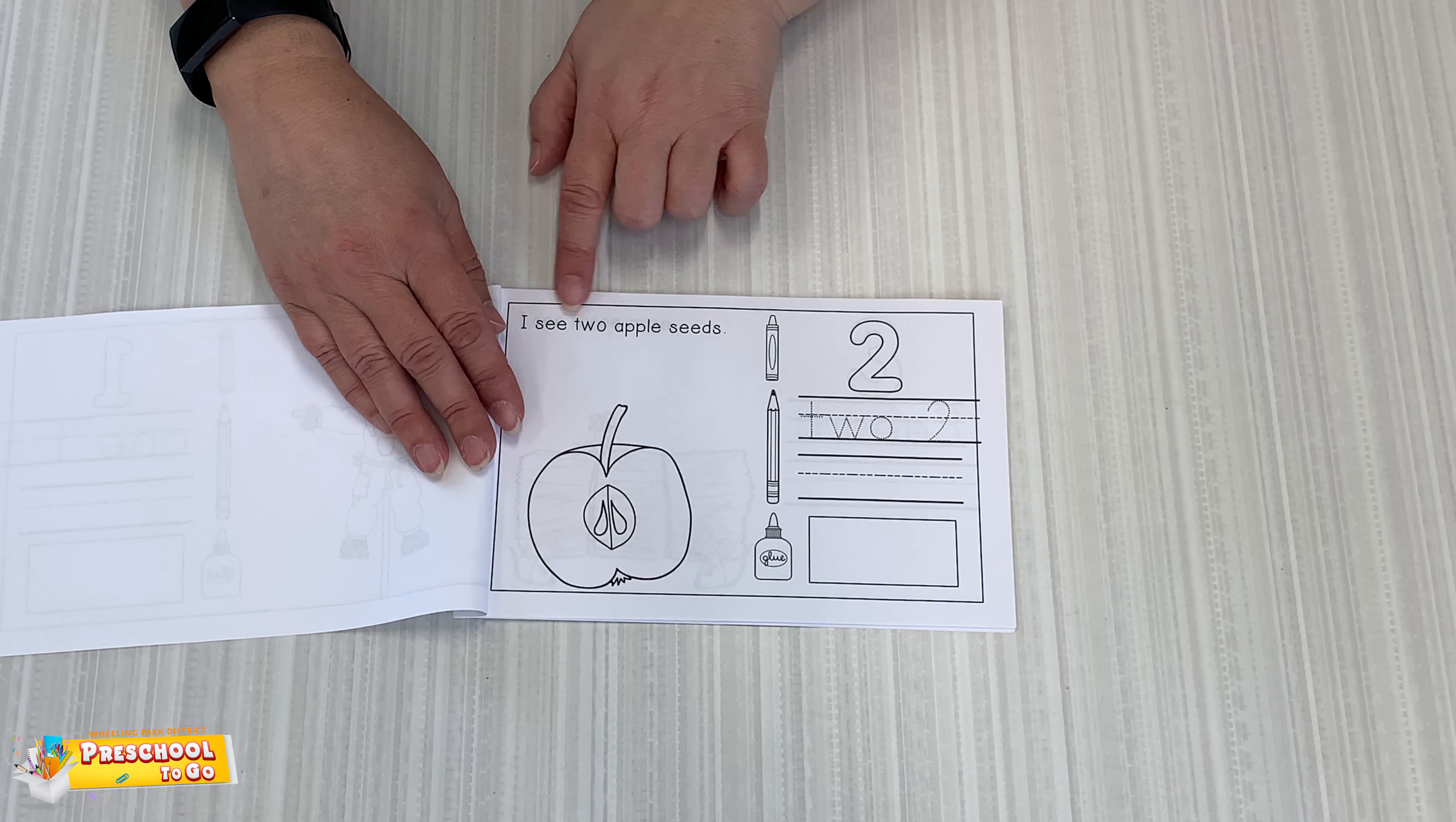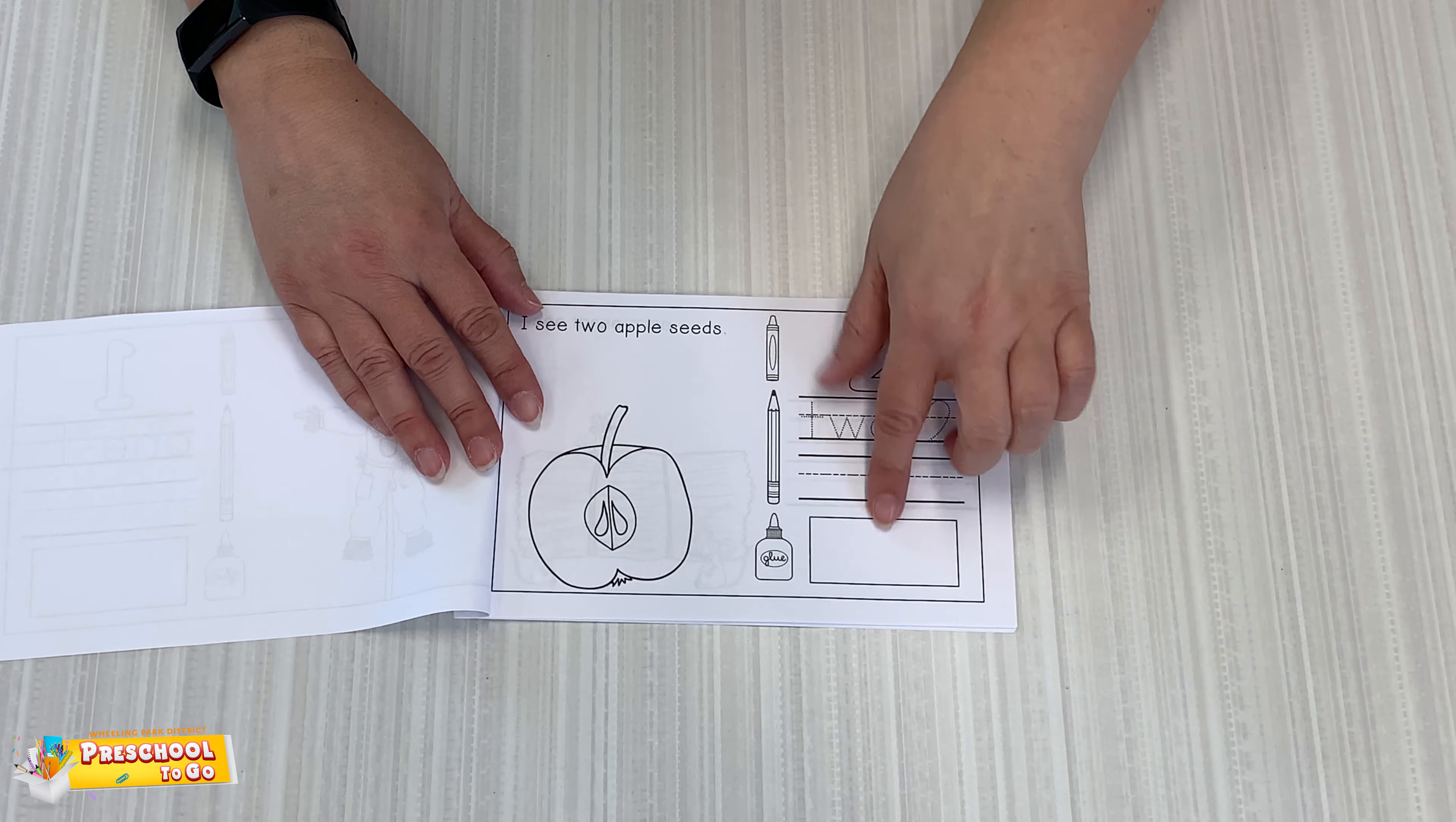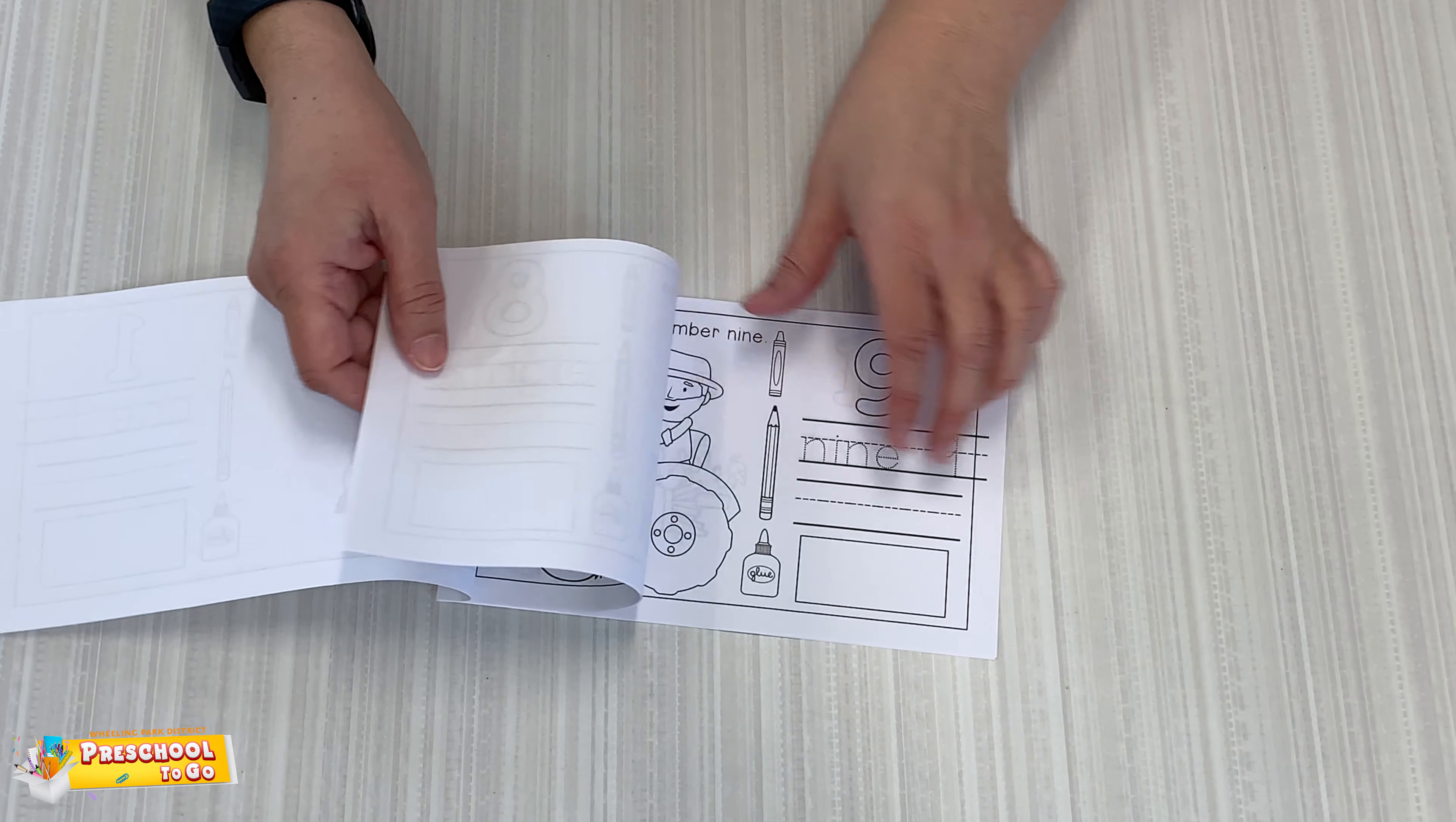And there's number two. I see two apple seeds. One, two. And you'll do the same thing for this. It goes all the way up through number ten.